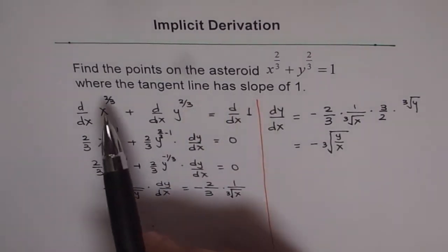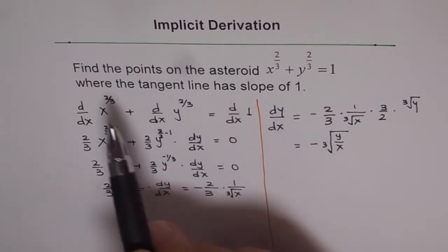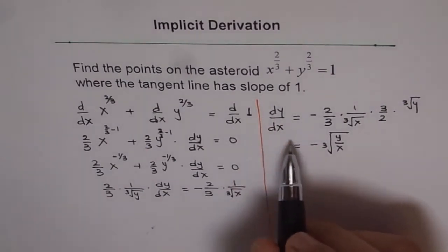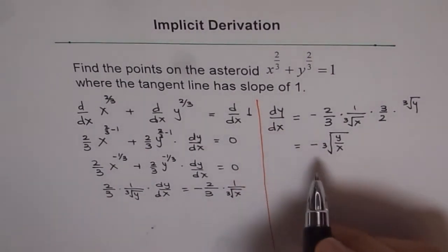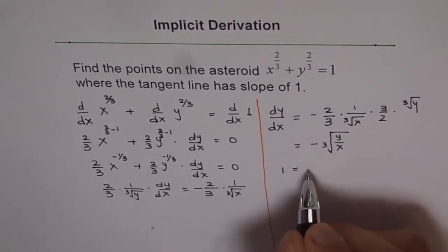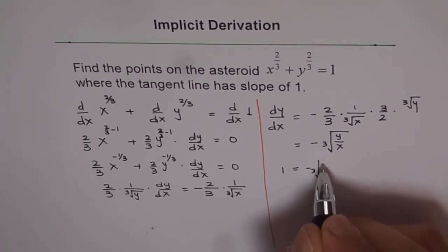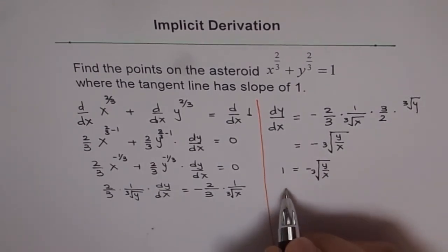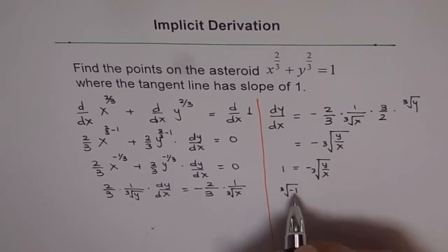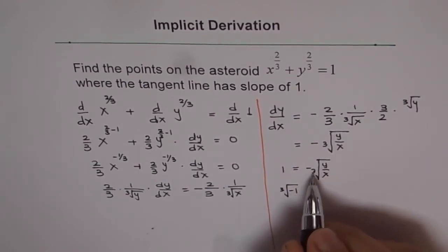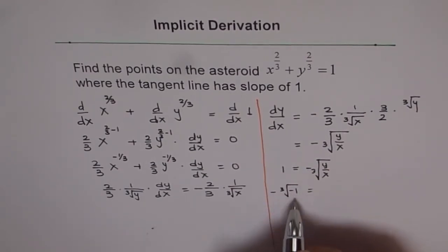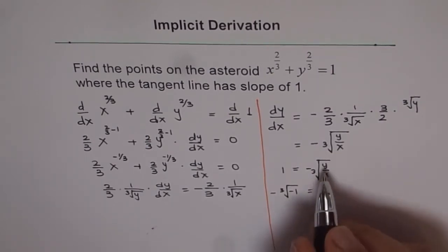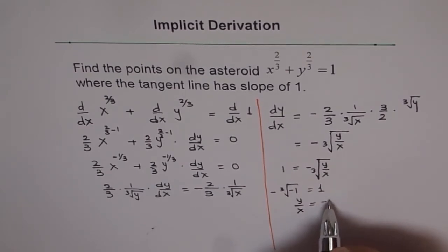Now the question is: find the points on the astroid where the tangent line has a slope of one. That means we need to find where dy/dx equals one. So we equate: one equals minus cube root of y over x. From here, since the cube root of minus one equals minus one, minus of cube root of minus one gives one. So we conclude that y over x equals minus one.